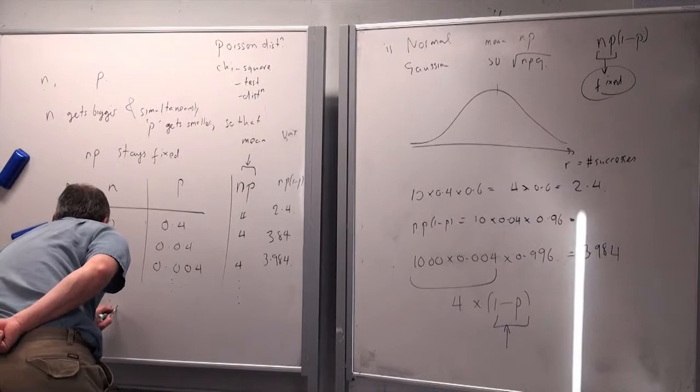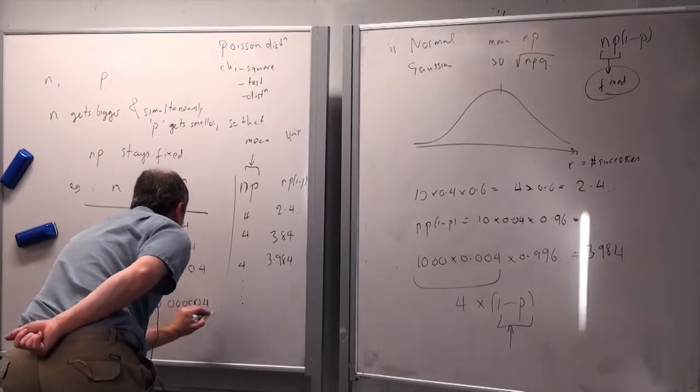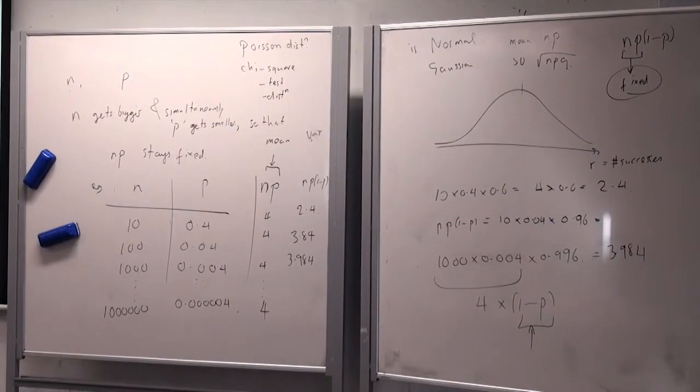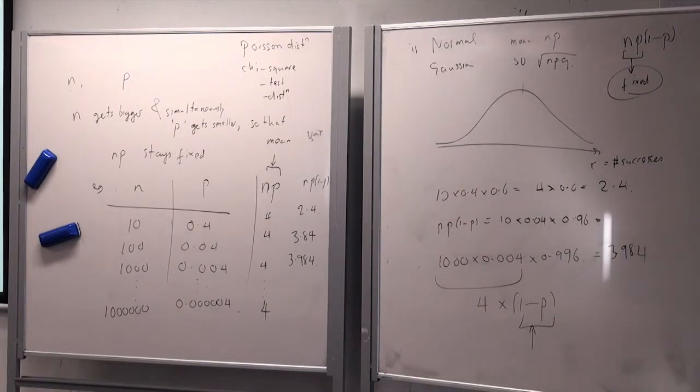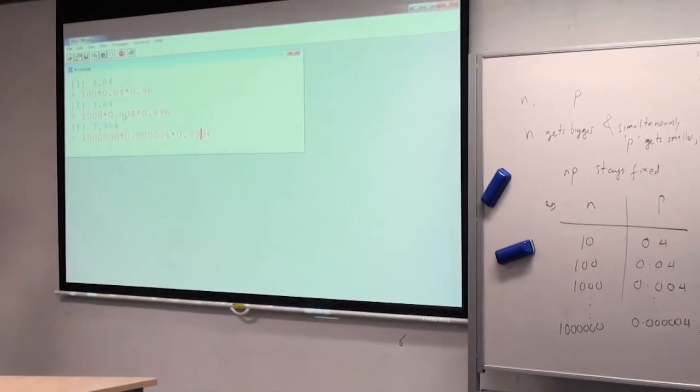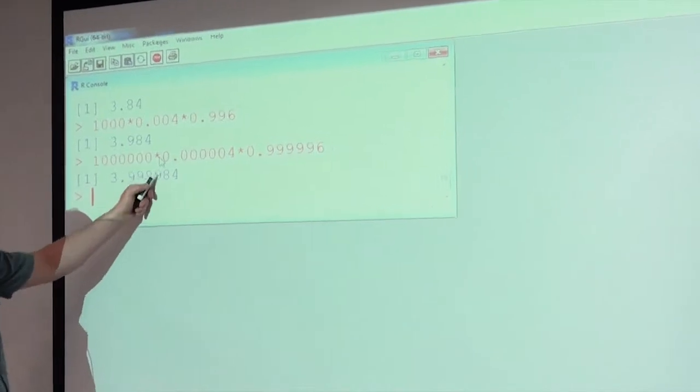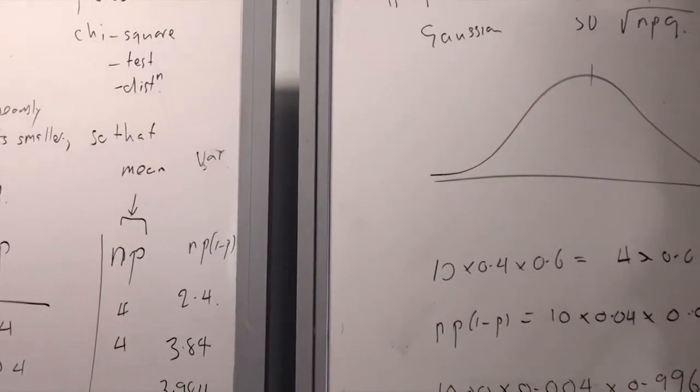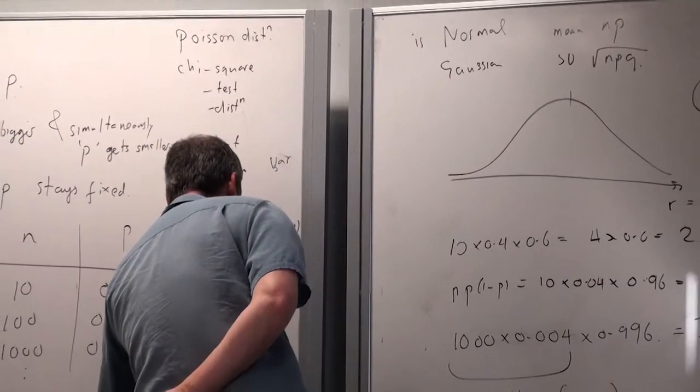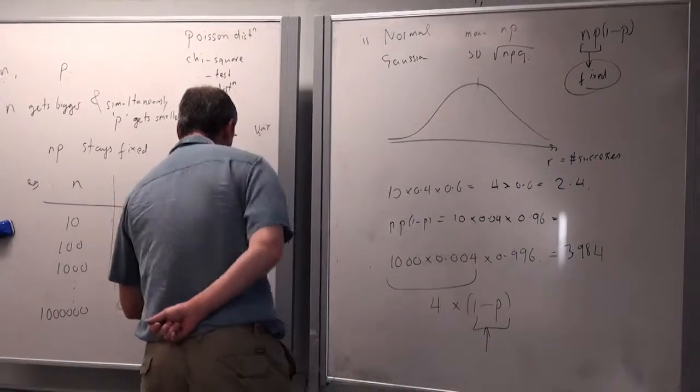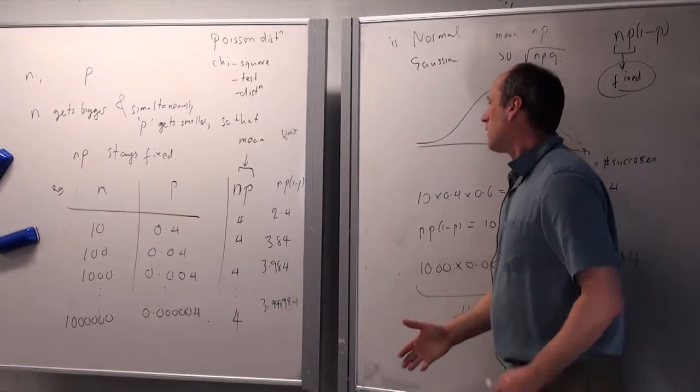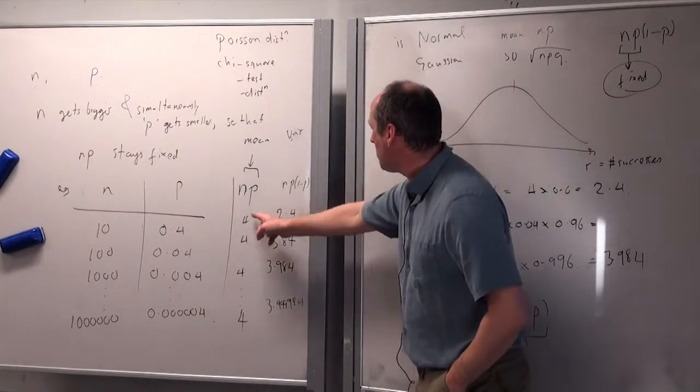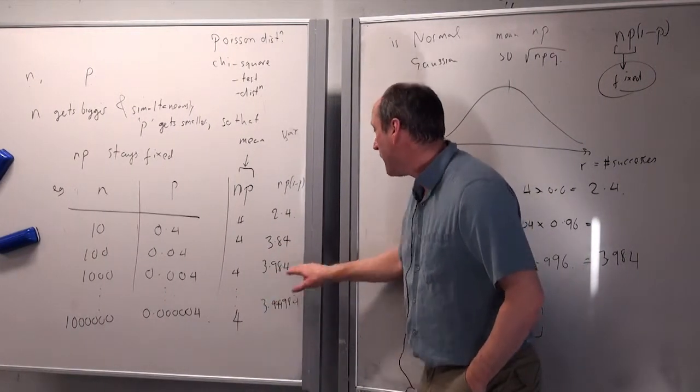Let's try it with a million. The mean is easy, it's 4 because I'm increasing and decreasing these in proportion. So let's work out the variance: 3.99996. This is variance at the moment because I'm not taking the square root of it. Yes I could do a billion, yes I could do a trillion, but it's happening because the mean is staying fixed and the variance is getting closer and closer to 4, and even here it's pretty close.